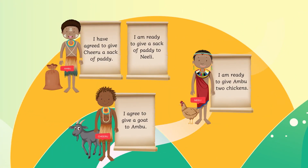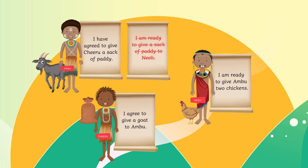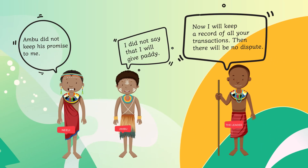Ambu had a sack of paddy that he promised to both Chiru and Neeli. He changed his mind when he found out that trading with Chiru for a goat was more profitable than trading with Neeli for two chickens. He broke his promise to Neeli and made a deal with Chiru instead. Such incidents lead to disputes and complaints later on.